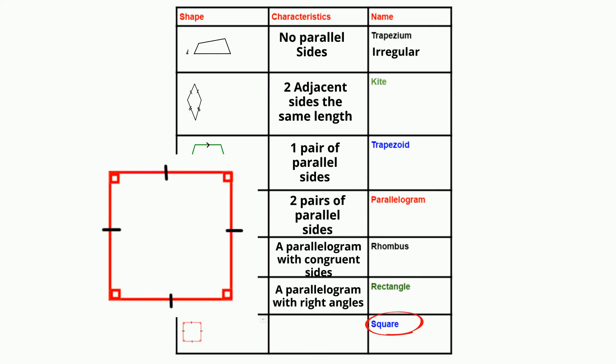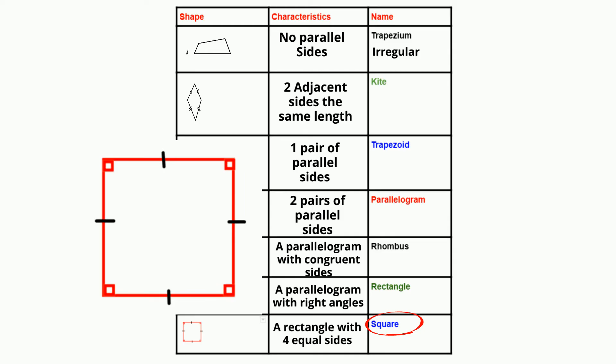And then a square is a combination of both. It is a rectangle with four congruent sides.